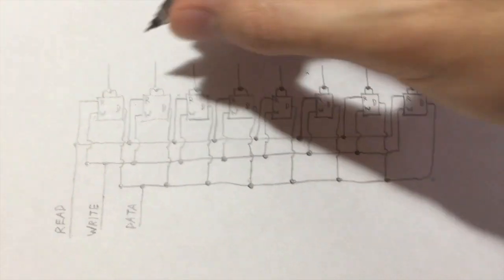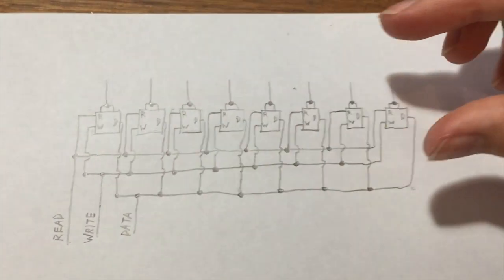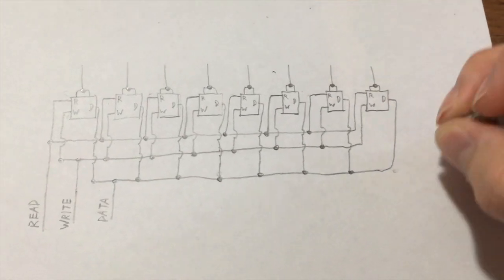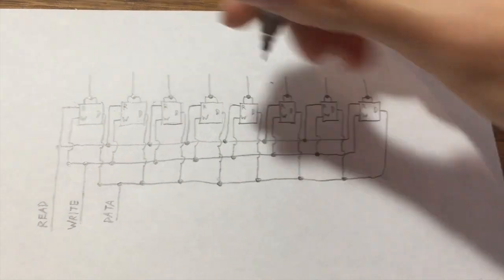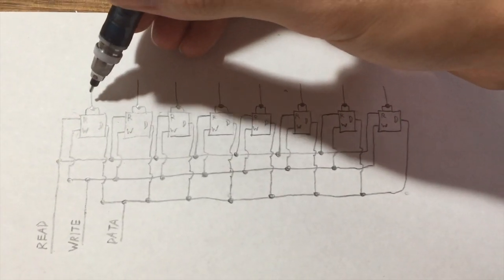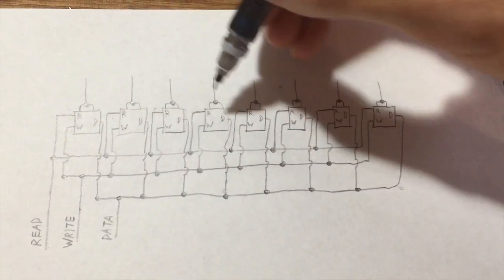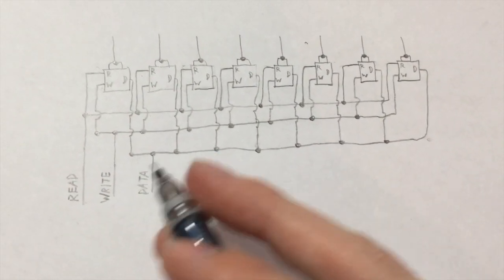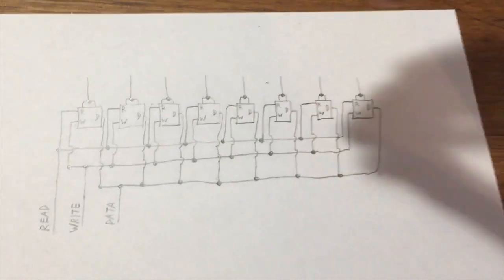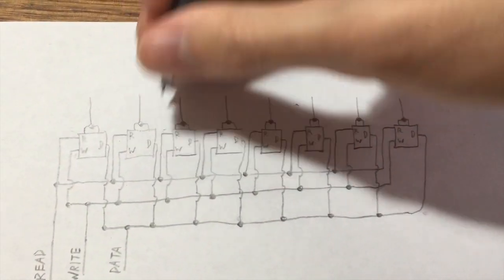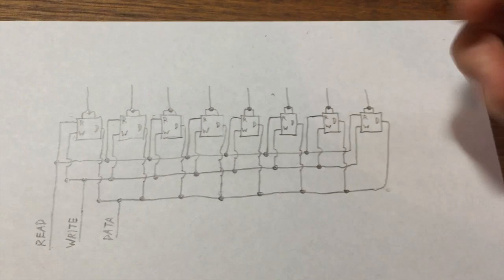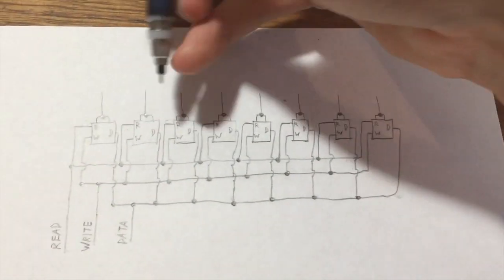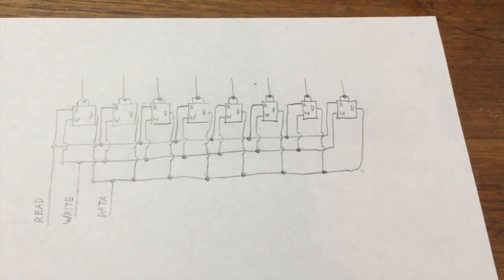There's a problem, however, that arises when you start to get really, really large numbers of these circuits, say maybe 64 memory locations. And that's the fact that you need one enable wire for each circuit, because the read, the write, and the data, you only need one of those for like the whole set. But the enable wires, we've got one for each one. And you can imagine having 64 of these, you'd need 64 wires, just to be able to write to any one of those that you wanted.